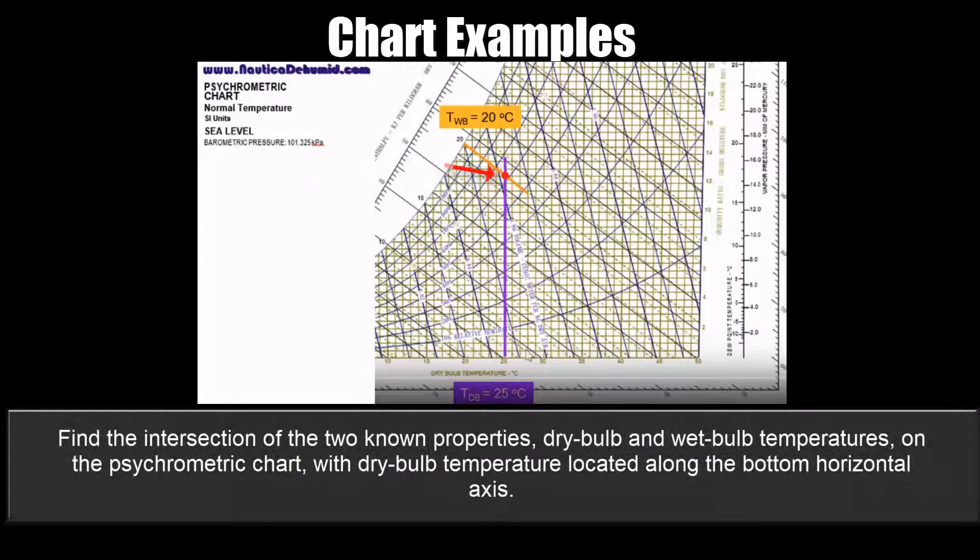Find the intersection of the two known properties, dry bulb and wet bulb temperatures, on the psychometric chart, with dry bulb temperature located along the bottom horizontal axis.